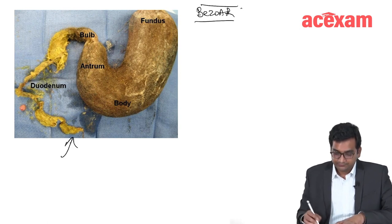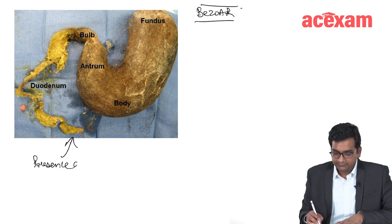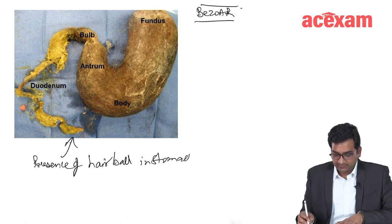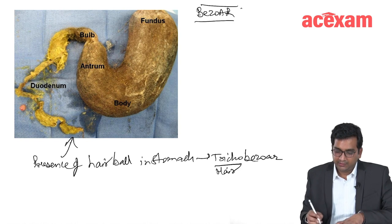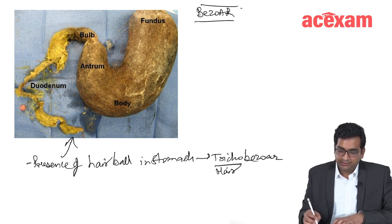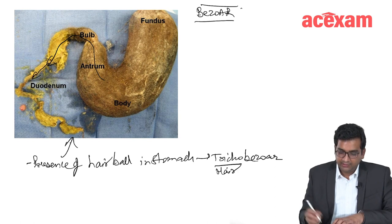What is this diagram? This is presence of hair ball in stomach or a trichobezoar. If this trichobezoar is extending in the duodenum, then it is known as Rapunzel syndrome.